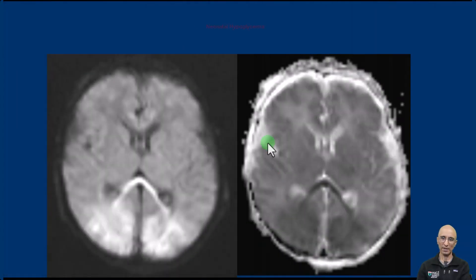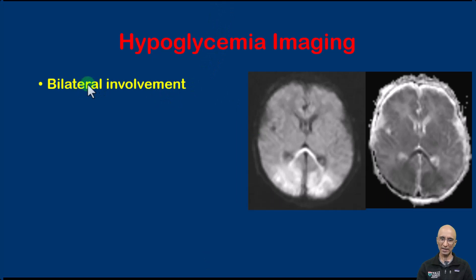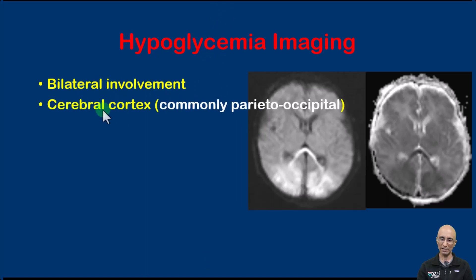The imaging appearances are consistent with neonatal hypoglycemia. In terms of imaging features of hypoglycemia, classically the imaging features will be bilateral. Commonly there will be involvement of the cerebral cortex in the parietal occipital regions, as we saw in our patient.